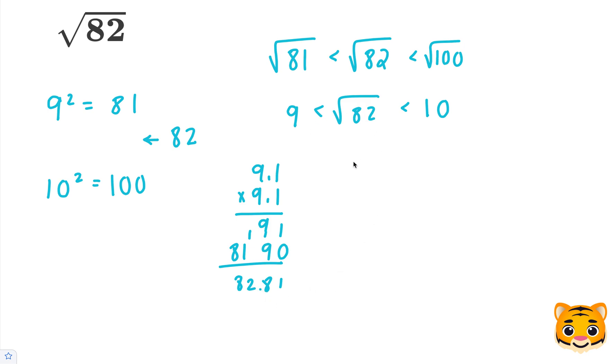And this is very close to 82. It's in fact as close to 82 as we can get with just a tenths-place approximation. So we can approximate the square root of 82 by saying it's about 9.1, since 9.1 squared gives us 82.81.